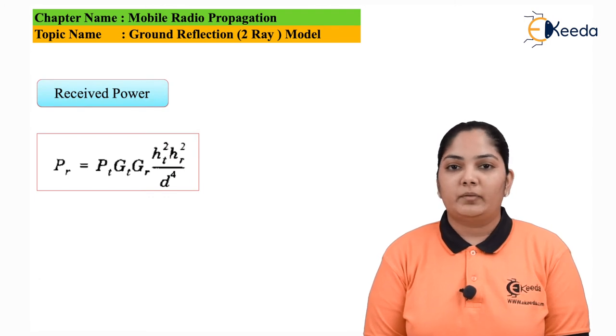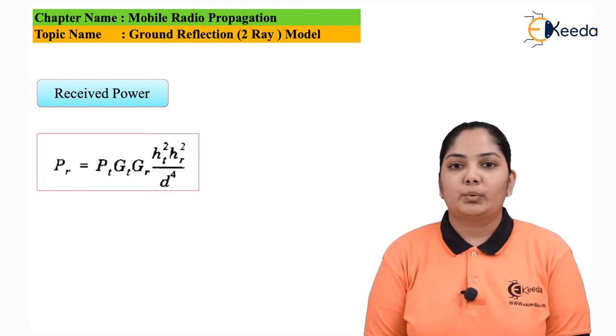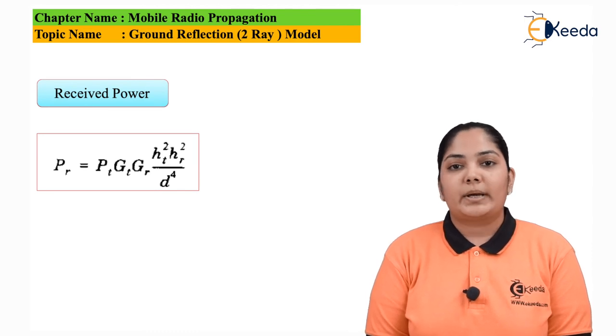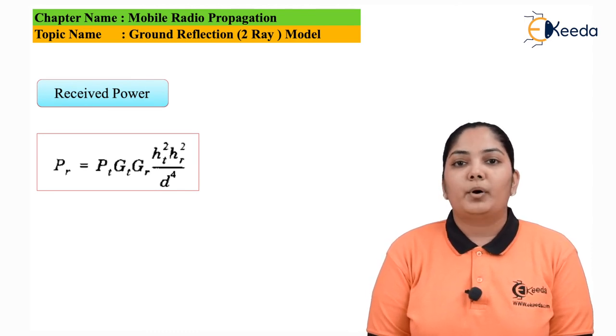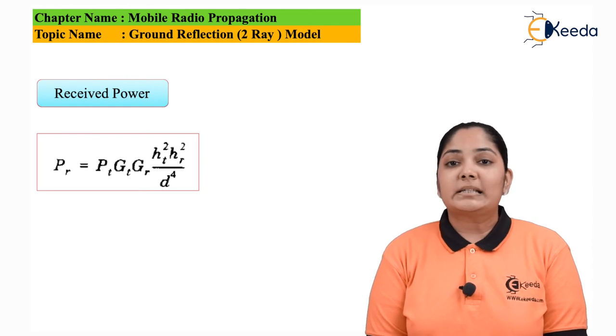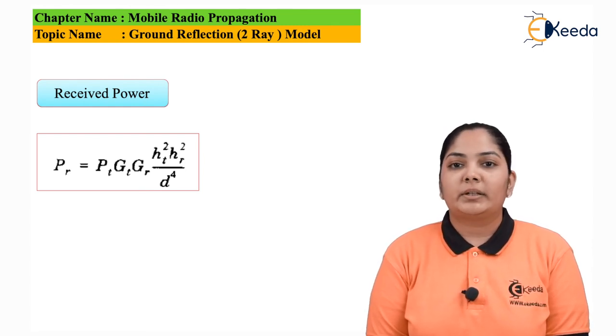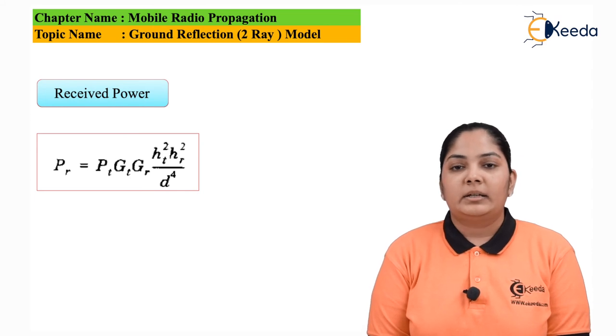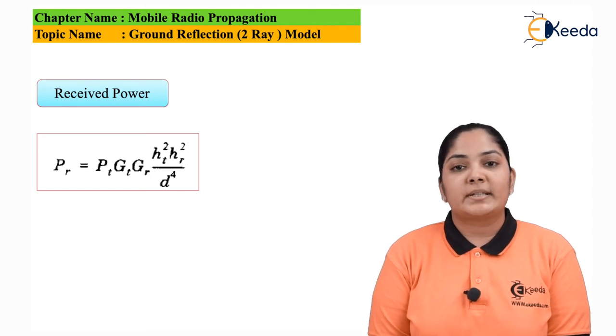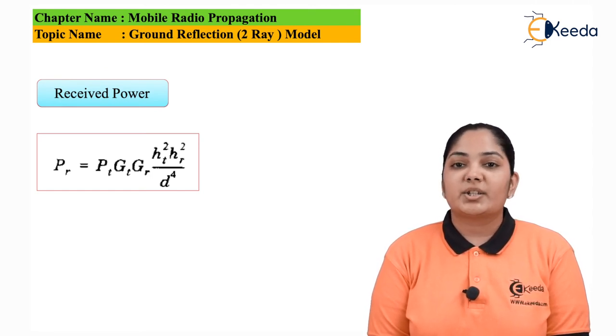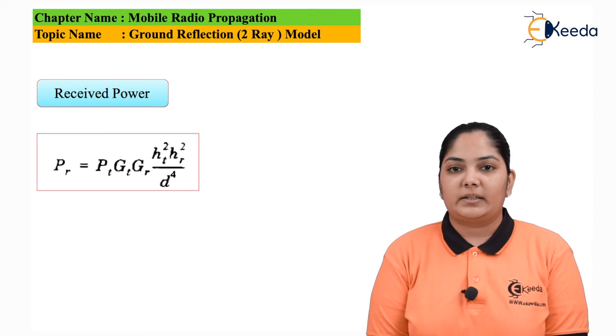Finally, we have the received power which is given as PR is equal to Pt gt gr Hr square Ht square upon D raised to 4. This is the received power that we are receiving. Remember we cannot do much with the gains of the antennas, we cannot drastically change the gains of the antennas, but what we can do in order to receive better power is we can adjust the height of the transmitter and the receiver antennas.